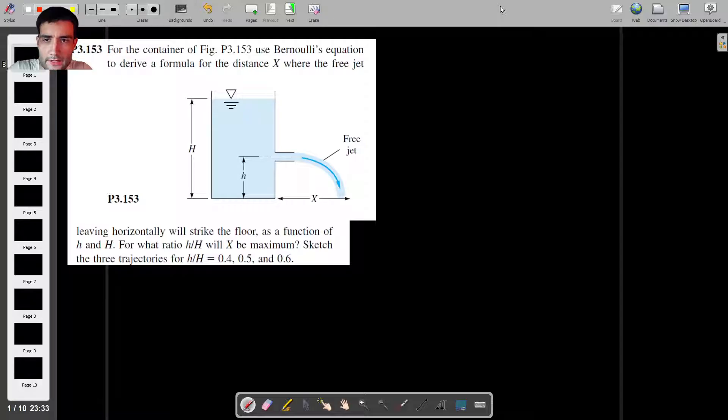We've got a container that is H meters tall, and this container has a hole at lowercase h distance away from the bottom. Through this orifice, the water leaves the container. At first, it will have a horizontal velocity, and then after it leaves the container, it will be subjected to free fall. Let's see how to approach this.